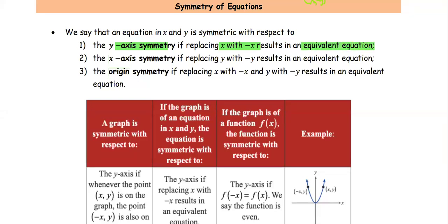For the case that is symmetric with respect to the x-axis, we replace y with a negative y, and that results in an equivalent equation. For the last case, the equation in x and y is symmetric with respect to the origin if we replace x with negative x and y with negative y, and the result is an equivalent equation.